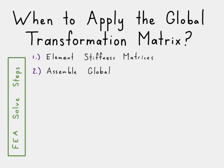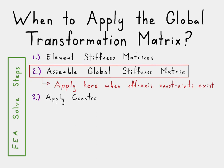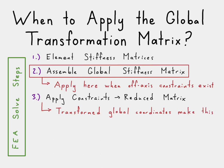The next step is when we assemble the global stiffness matrix equation. At this point is when we need to apply the global transformation matrix if off-axis constraints exist. The reason is that when we apply the constraints to create our reduced matrix, it's only possible if we transform the coordinates using that global transformation matrix, because we have that off-axis constraint which would be difficult to apply otherwise.